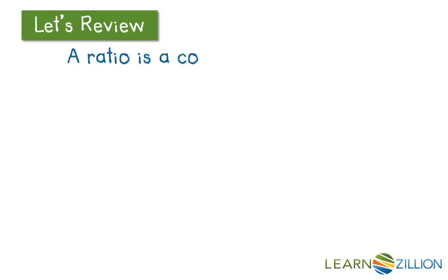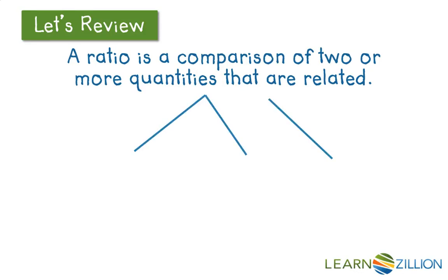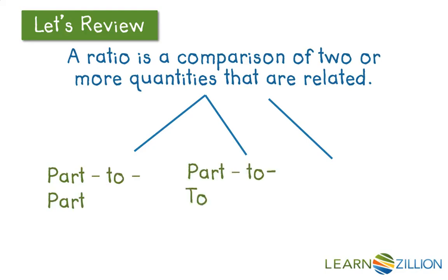A ratio is a comparison between two or more quantities that are related. You may also remember that ratios can be three different types of comparisons. They can compare a part to another part, a part to a total, or rates.